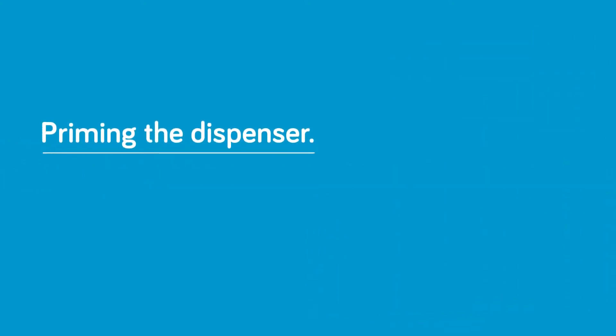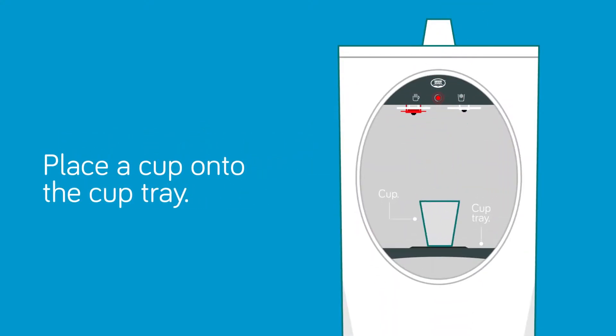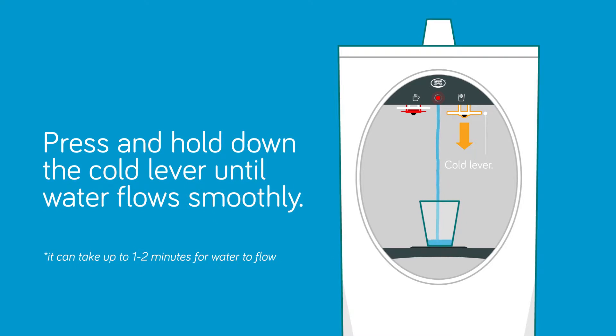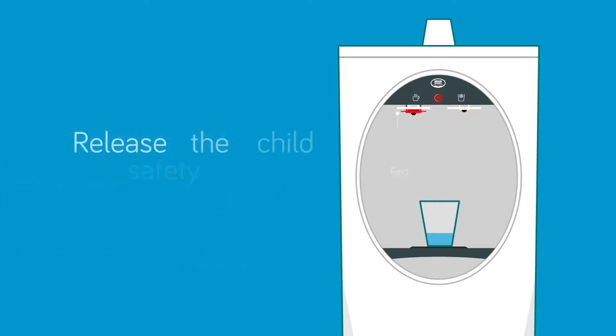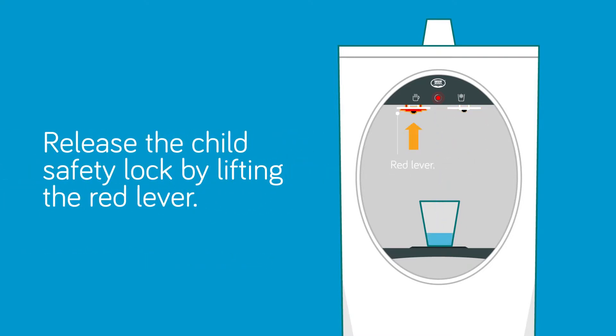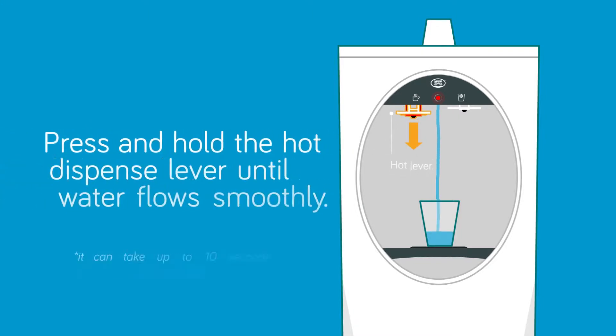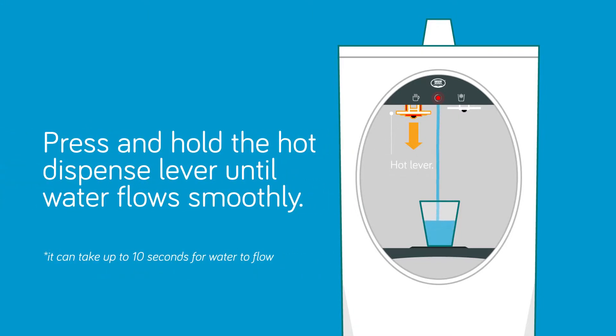One more step. Priming the dispenser. Place a cup onto the cup tray. Press and hold down the cold lever until water flows smoothly. Then release the child safety lock by lifting the red lever and press and hold the hot dispense lever until water flows smoothly.